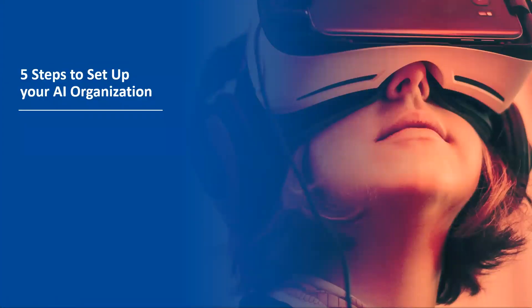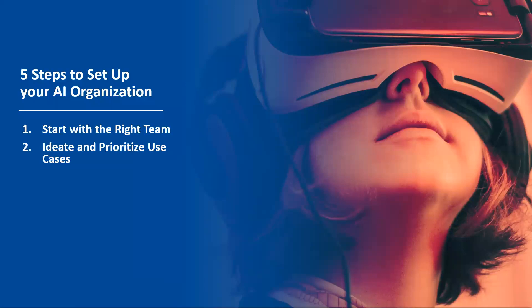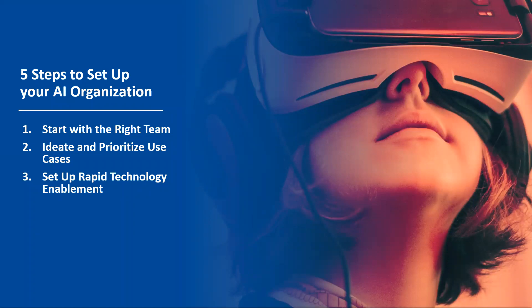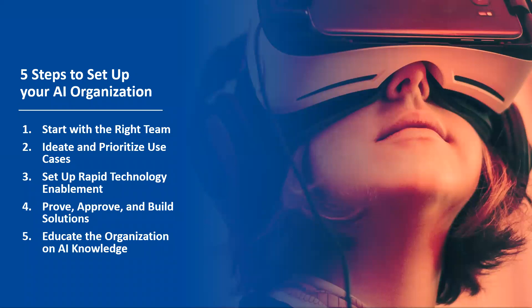The five steps I'm going to outline: Step one is to start with the right team. Step two is to ideate and prioritize your use cases. Step three is to set up rapid technology enablement. These first three steps are really focused on getting the right team, the right problems, and being able to develop value quickly — because these are expensive people to hire and there's significant initial investment required. Step four is to prove, approve, and build solutions. The fifth and final step is to educate your organization on AI knowledge.